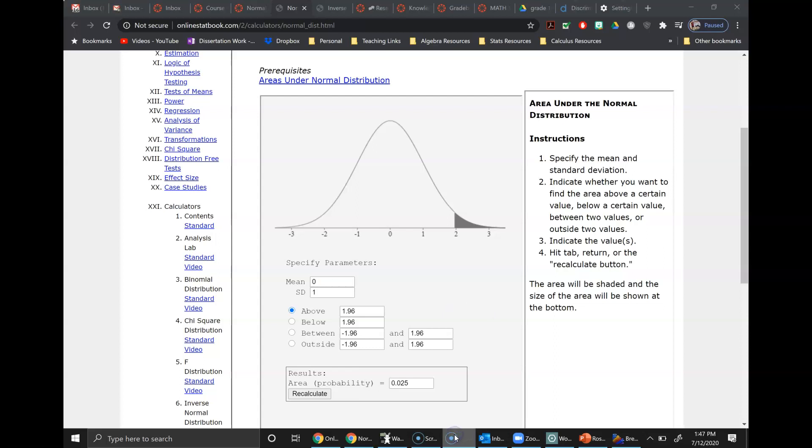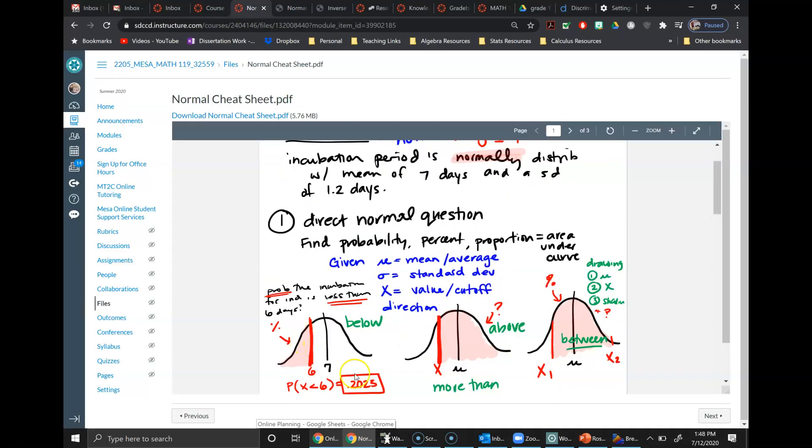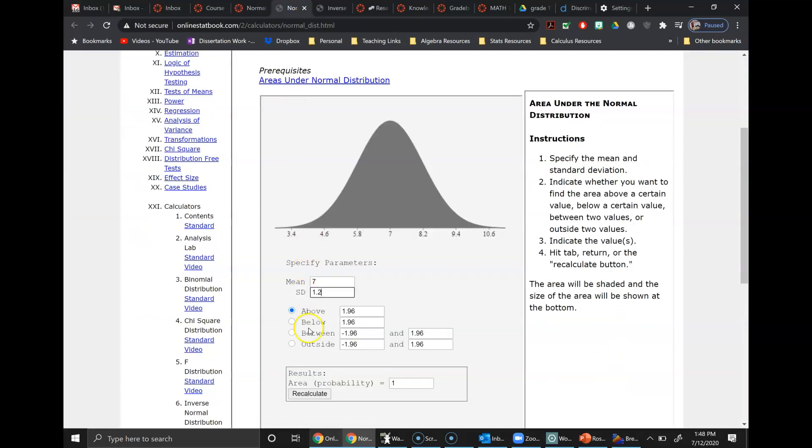So seven, 1.2, and then you just decide which one it is. And you can see here on that cheat sheet I've given you below, above, and between as the different keywords that you could be doing here. So we'd be looking for, in this case, below six.